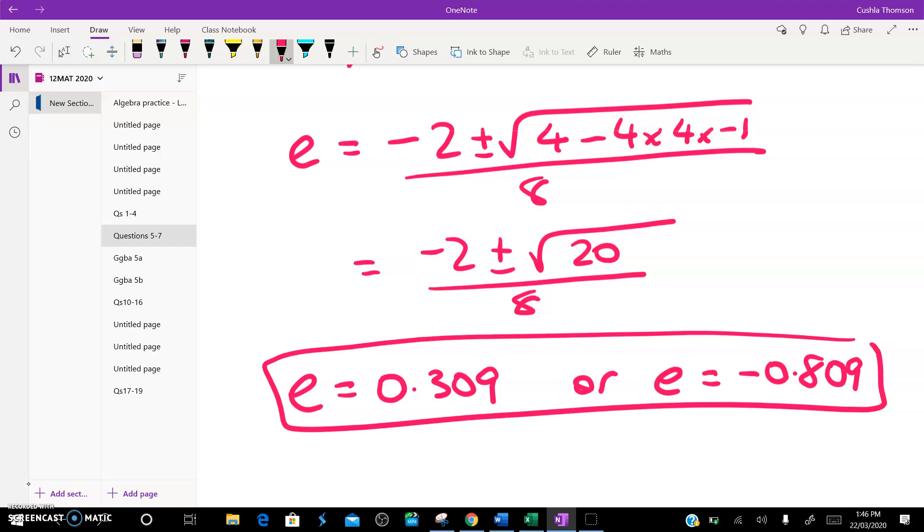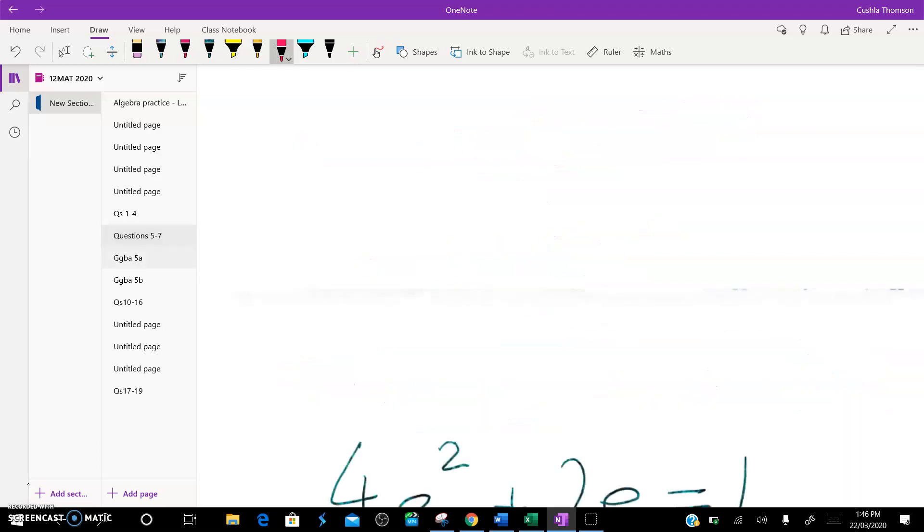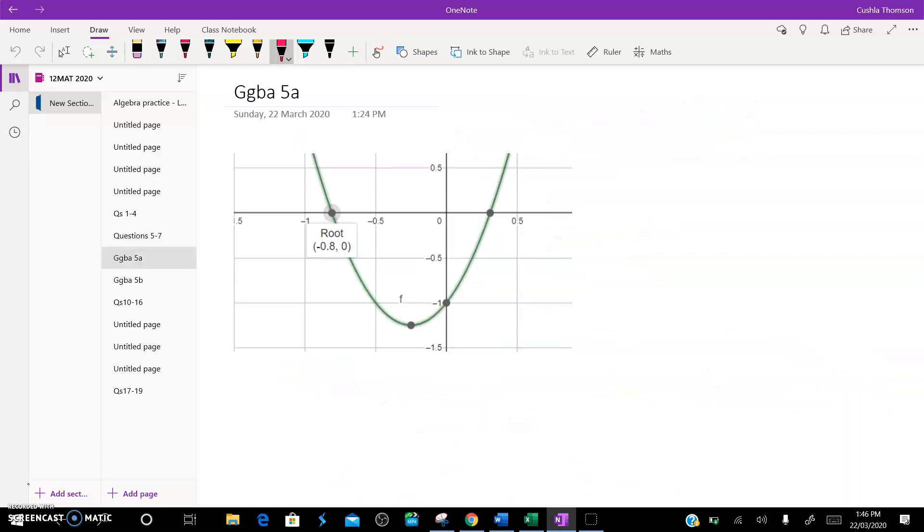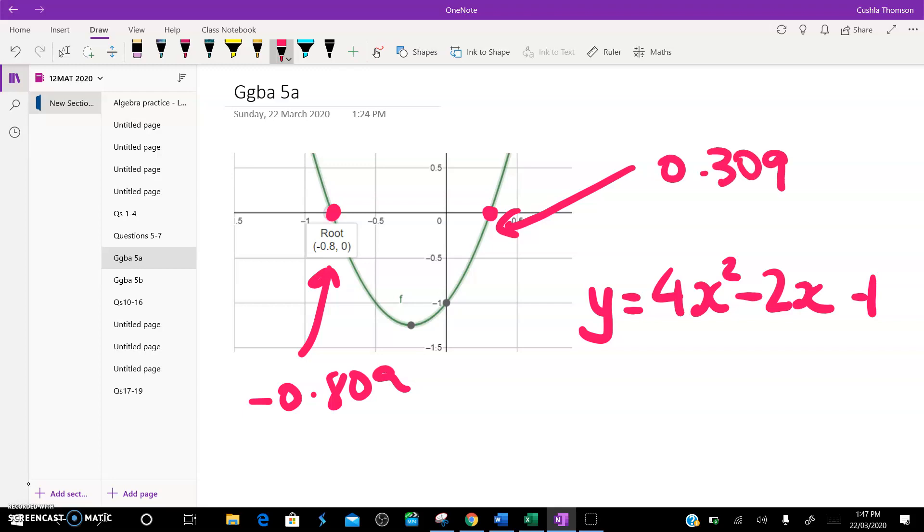What I want to show you now is what that means graphically. And when we move on to our graphing topic, you'll get really used to working with quadratic graphs. But you already did quite a lot of this at level 1. So this is the graph of the function y equals 4x squared minus 2x minus 1. And you can see that the roots of the equation, or the solutions of that equation, are my 2 x values. So this one here is negative 0.809, and this one here is 0.309. And that's what we mean when we solve an equation.